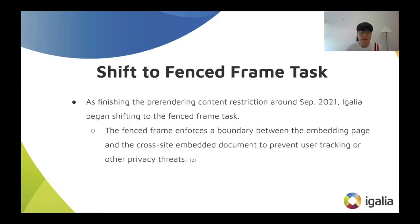For example, we had fixed code or features that should not trigger for non-primary pages using the is-primary main-frame method. During this period, our team had landed over 100 CRs for the task. As we were fixing the pre-rendering content's restriction task, we began to shift to the fenced frame task. Simply explained, the fenced frame imposes a boundary between the embedding page and the cross-site embedded document to prevent user tracking or other privacy issues.